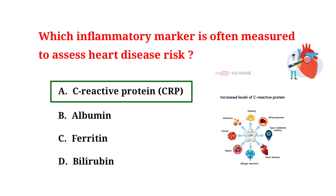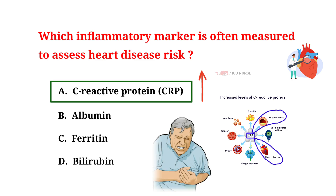C-reactive protein (CRP) is often measured to assess heart disease risk because it is a marker of inflammation in the body. Elevated levels of CRP can indicate inflammation in the arteries, which is a risk factor for atherosclerosis, i.e. plaque buildup in the arteries. High CRP levels have been associated with an increased risk of heart attacks and other cardiovascular events. Measuring CRP levels helps doctors evaluate a patient's risk of heart disease and guide prevention and treatment strategies.